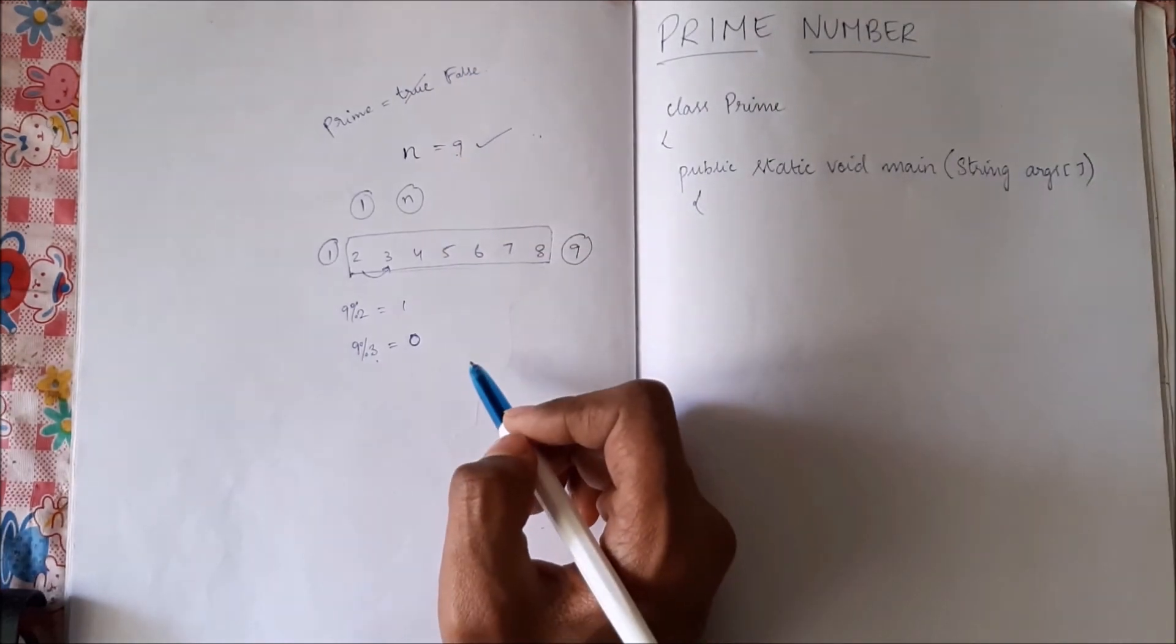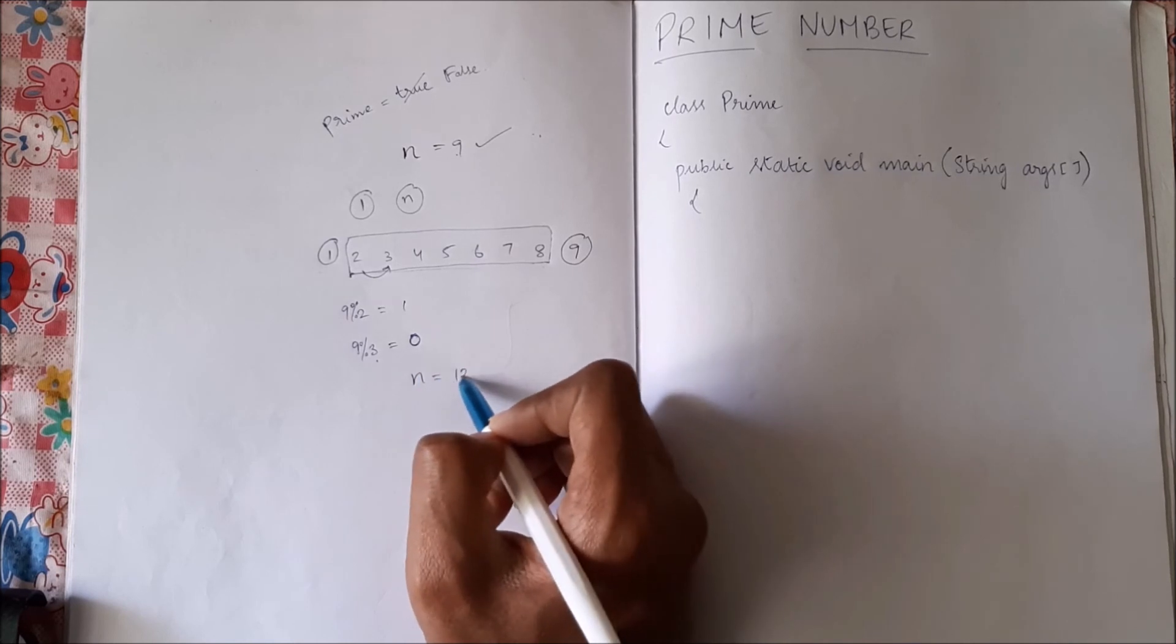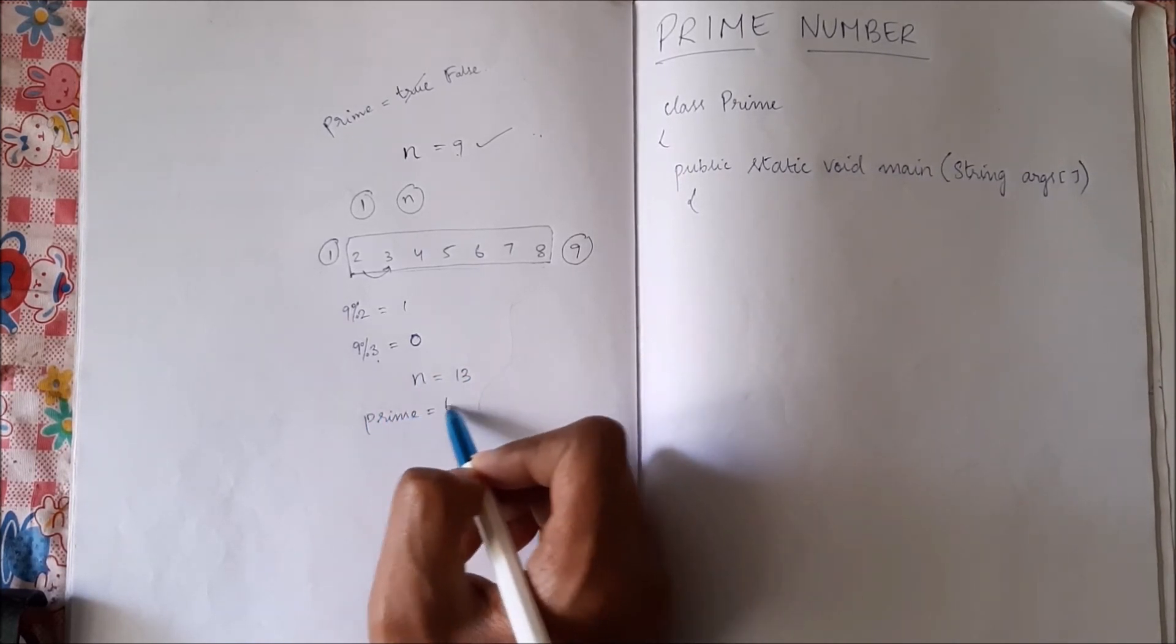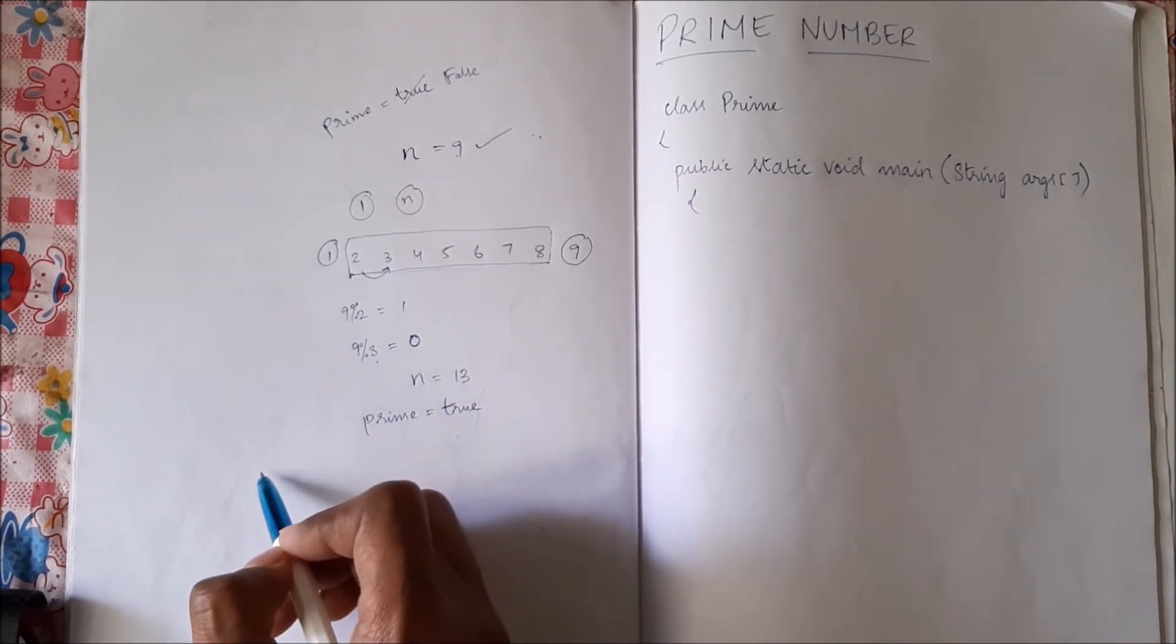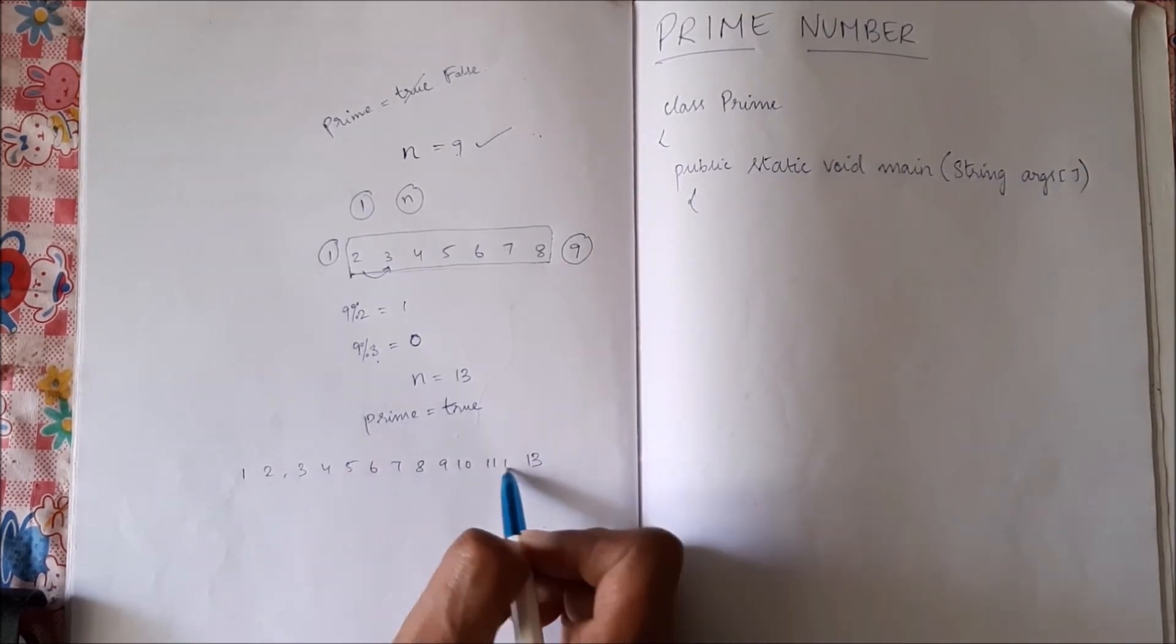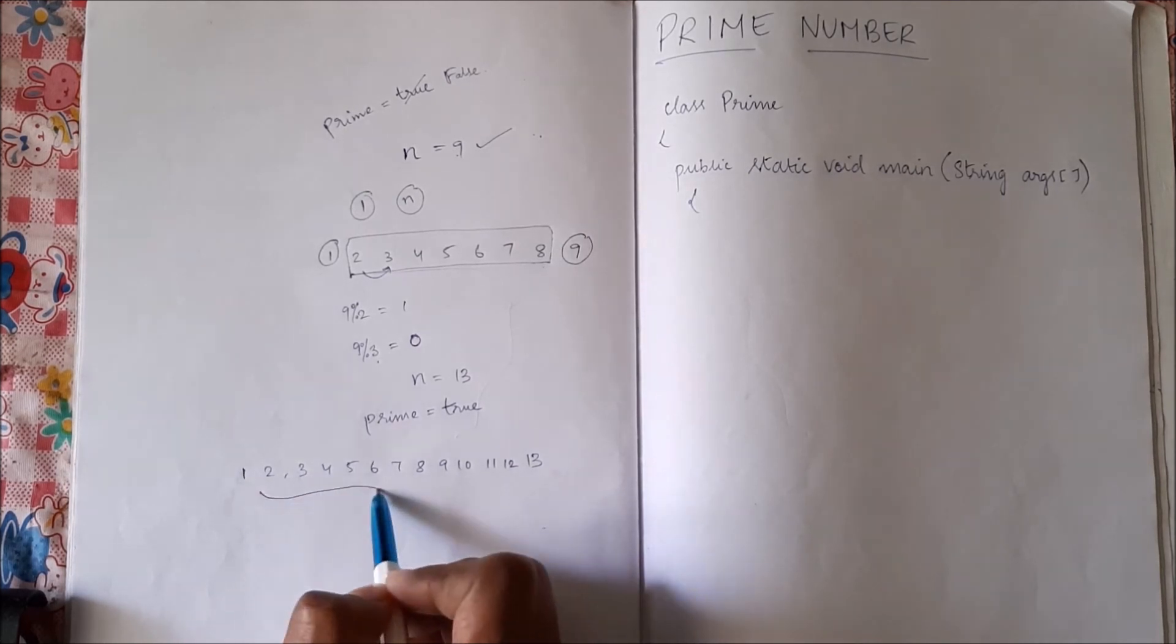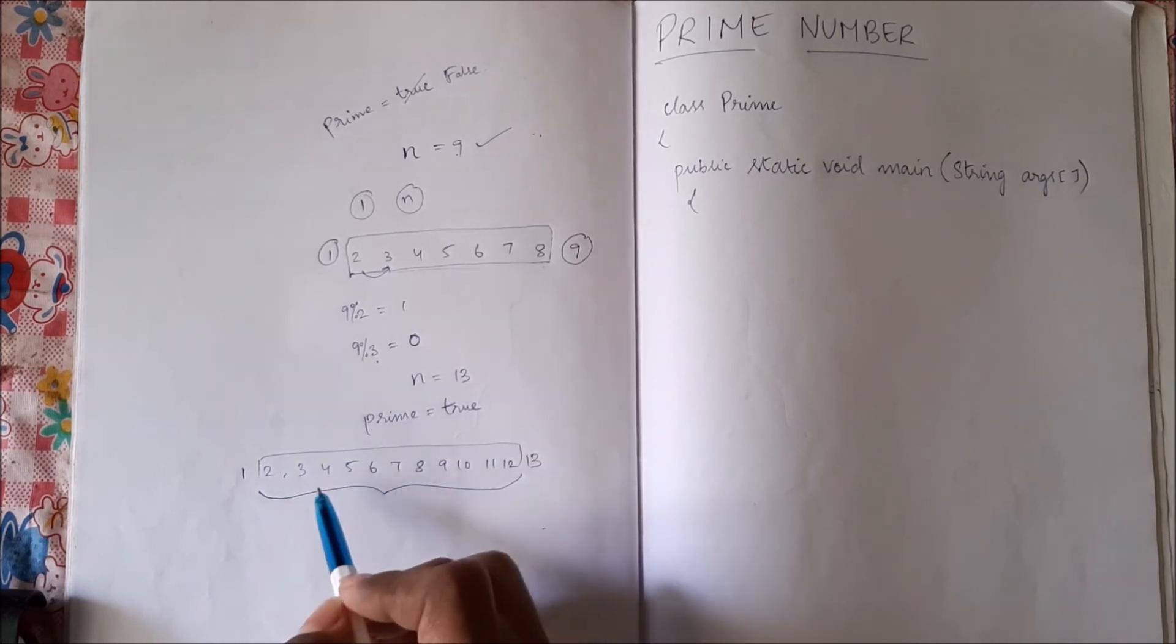So let us take one more example. Let us say n equal to 13. Initially we will assume that it is a prime. Now we have to check numbers between 1 and 13. We have to check whether 13 is divisible by these numbers.